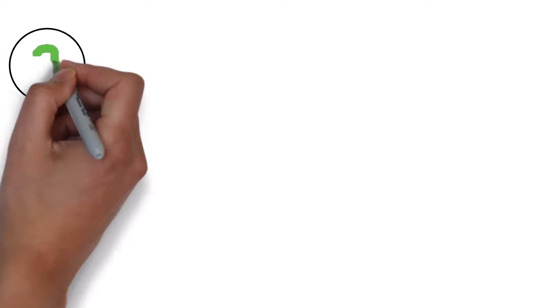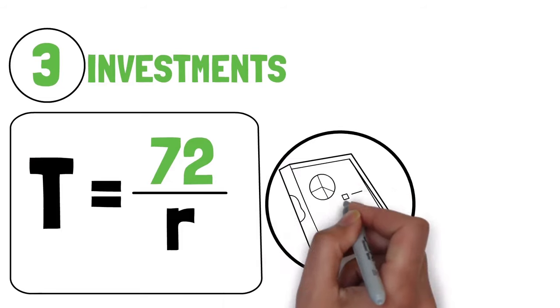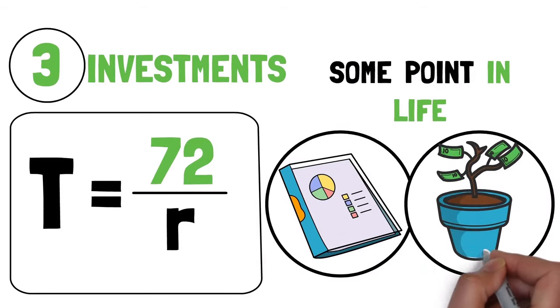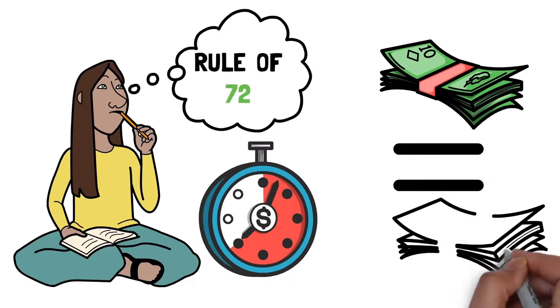Pillar number three: investments. The rule of 72 can be used to evaluate your investments. At some point in life, we all want to make investments, and you can definitely use this rule to have a key insight on how long your money will take to double.